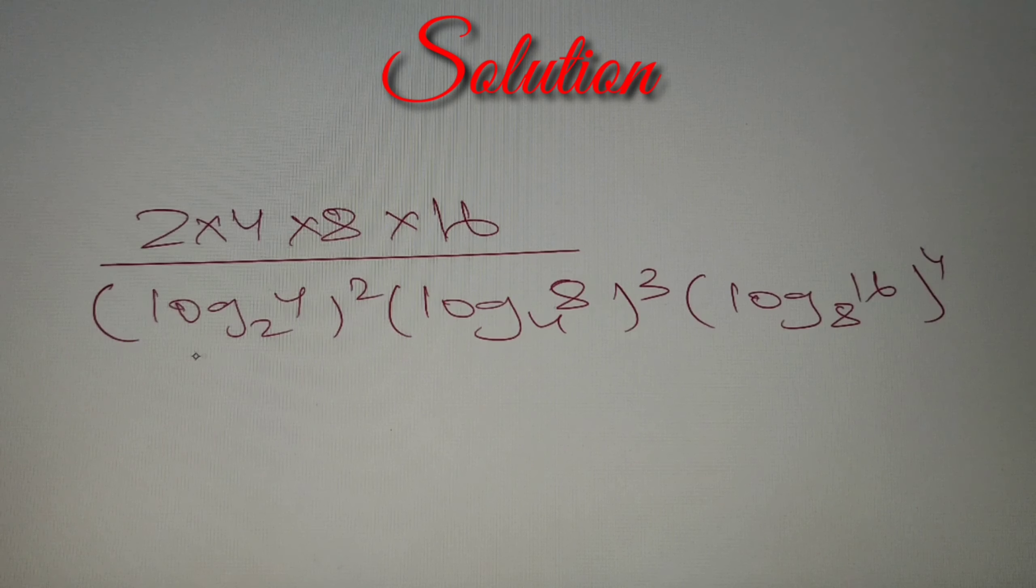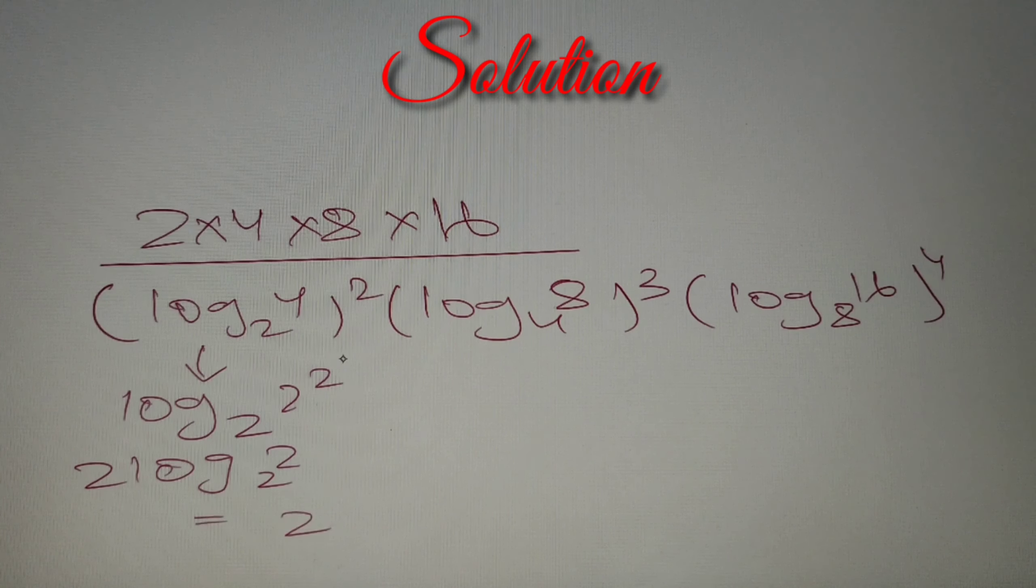Checking the first bracket, we have log 4 base 2. Now log 4 base 2 can be written as log of 2² to base 2. We know that log of 2² to the base 2 can be written as 2 log 2 base 2, and log a to the base a equals 1. So simply this value will be 2², and the value of our first bracket equals 4.